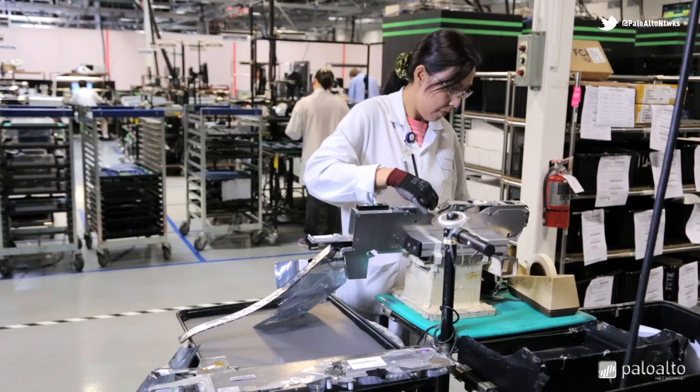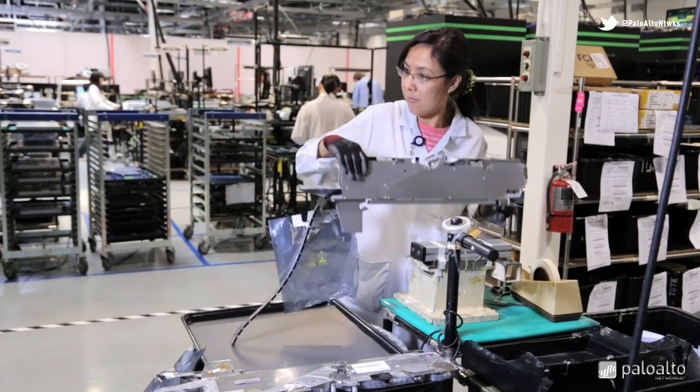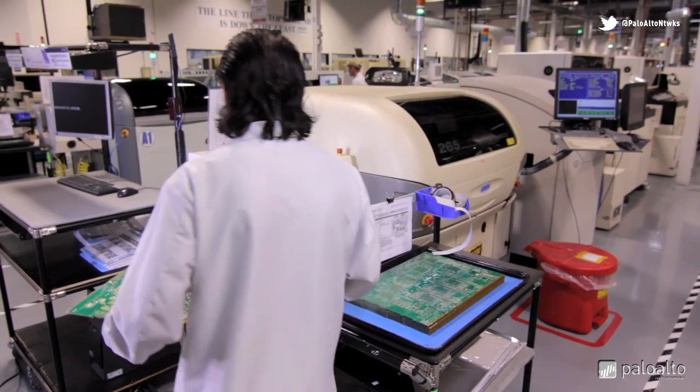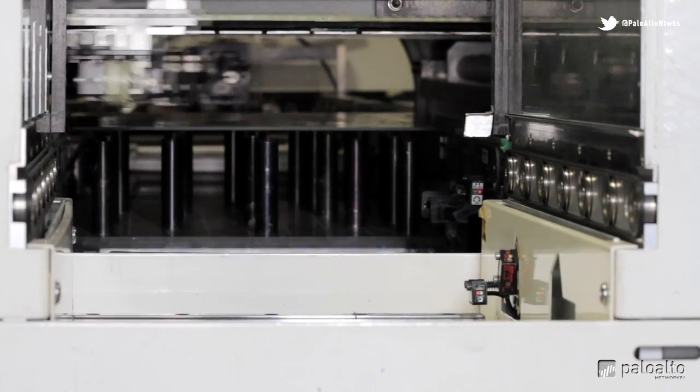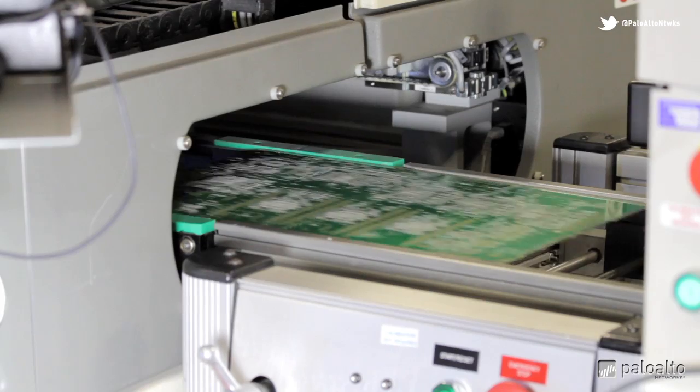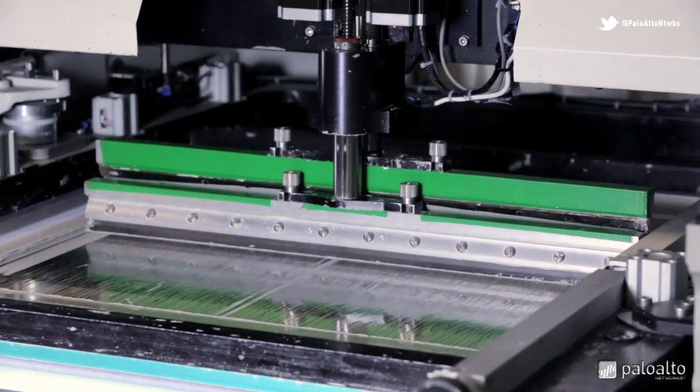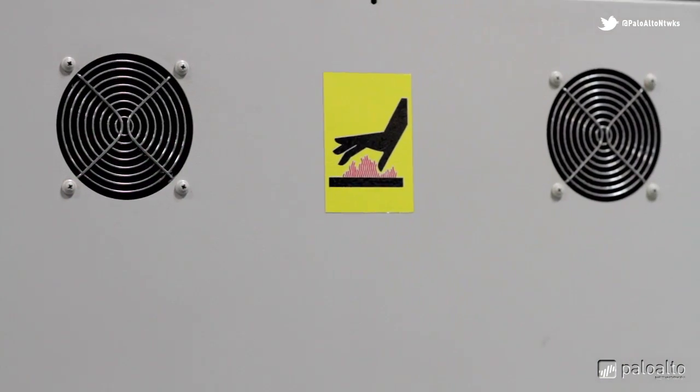This starts at the kitting station where the components are all gathered up. Next stop is the solder paste printing machine. Here, solder is deposited to the board via metal stencil. A squeegee wipes paste over the stencil. Once heated, this will bind the components to the board.